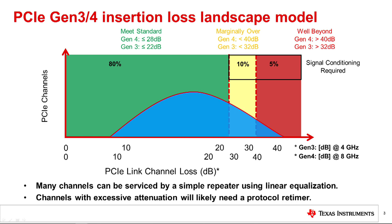Since PCIe 3.0 was standardized in 2010, higher speeds and increased system complexity have often resulted in channel architectures which struggle to comply with the maximum channel loss limits. As shown in the previous slide, system materials and devices have evolved to handle the increasing speed and attenuation present in PCIe links.